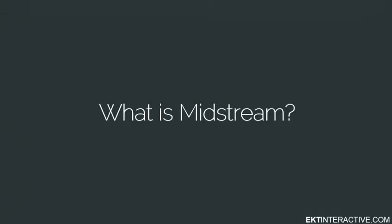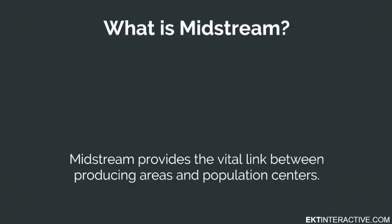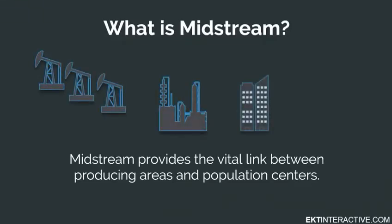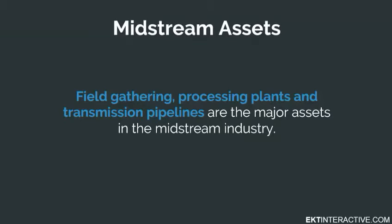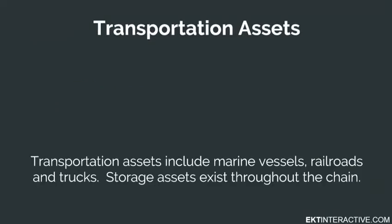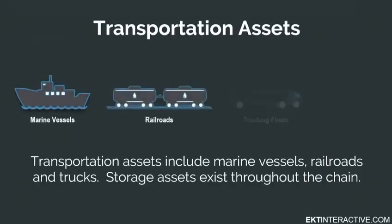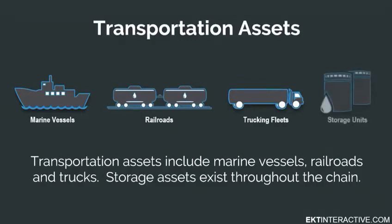So, what is midstream? Midstream is the function of the oil and gas industry that provides the vital link between producing areas and the population centers where industrial, refining, and residential customers are located. Field gathering, processing plants, and transmission pipelines are the major assets in the midstream industry. Transportation assets include marine vessels, railroads, and trucking fleets. Storage assets also exist throughout this chain.